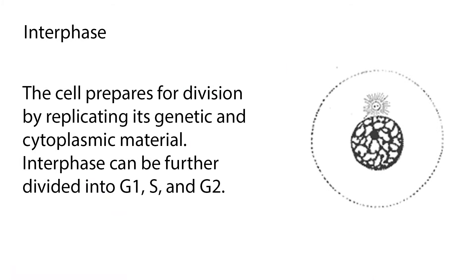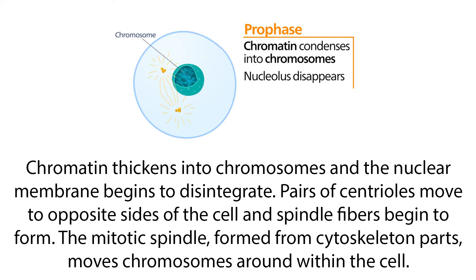The primary events that occur during mitosis are interphase, where the cell prepares for division by replicating its genetic and cytoplasmic material. Interphase can be further divided into G1, S, and G2. Then there's prophase.